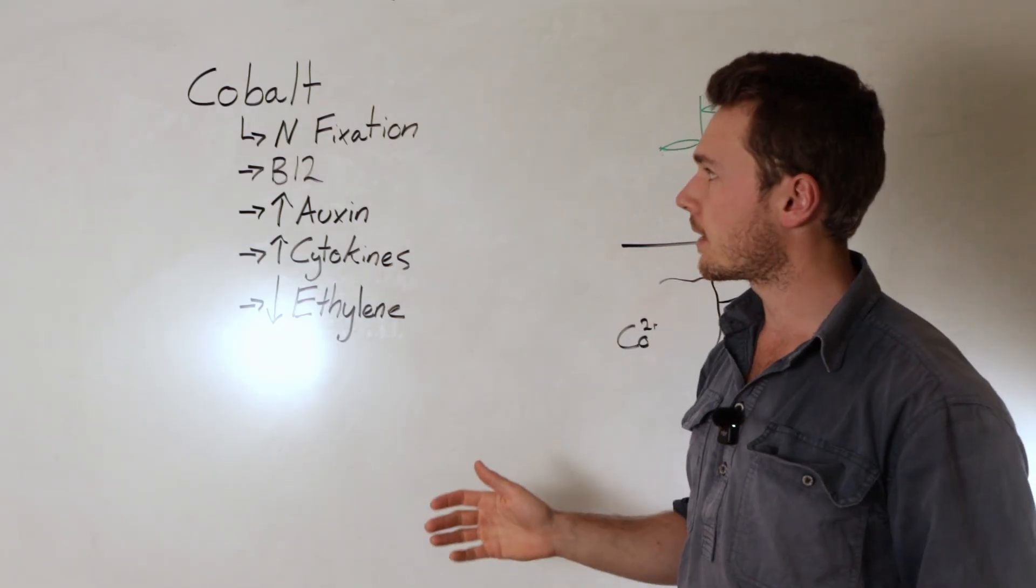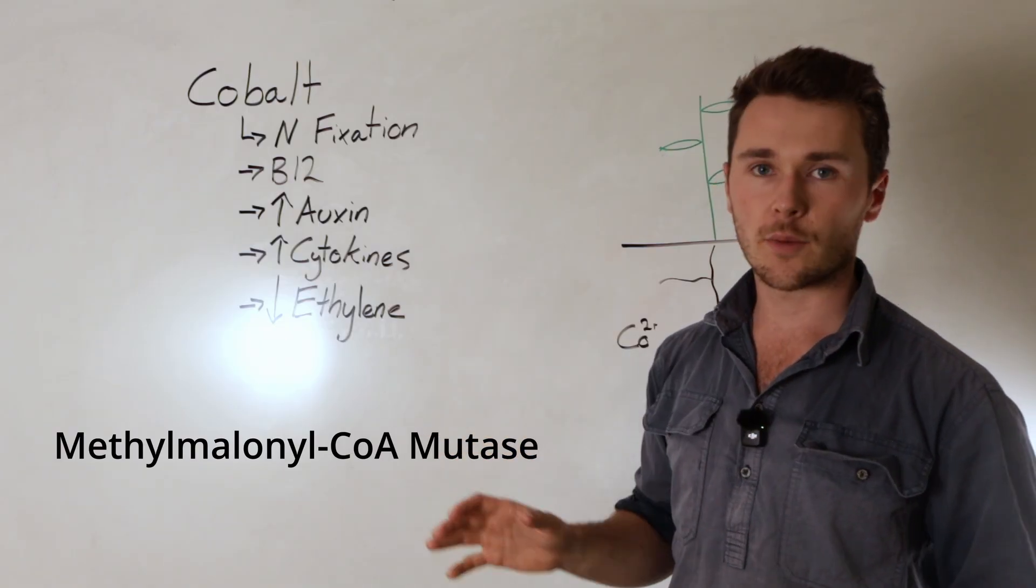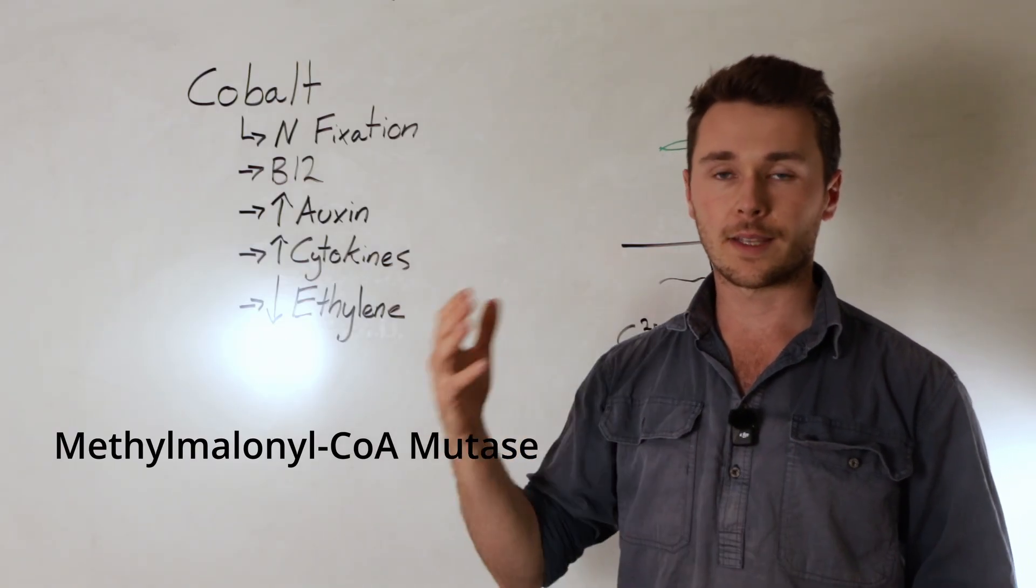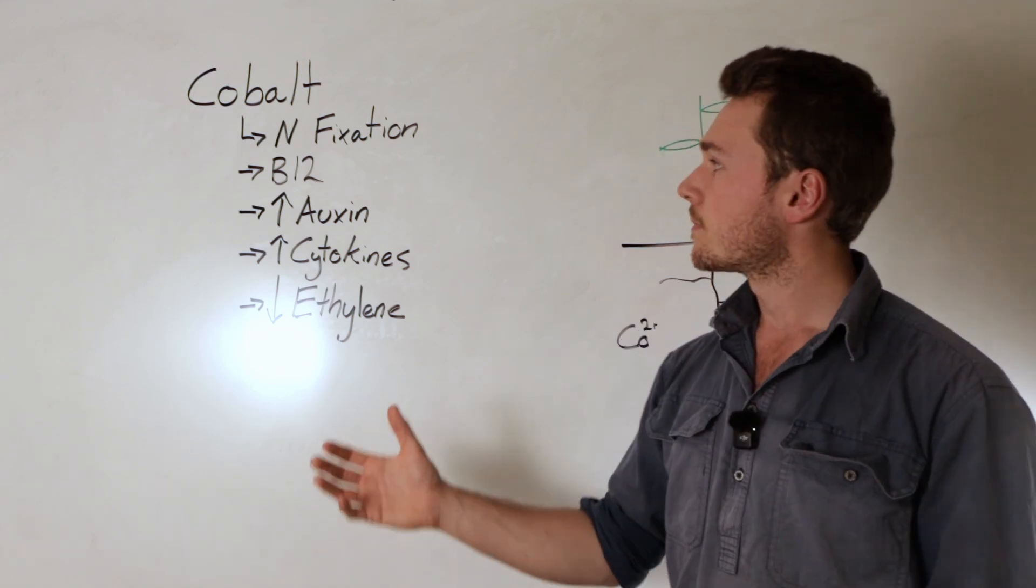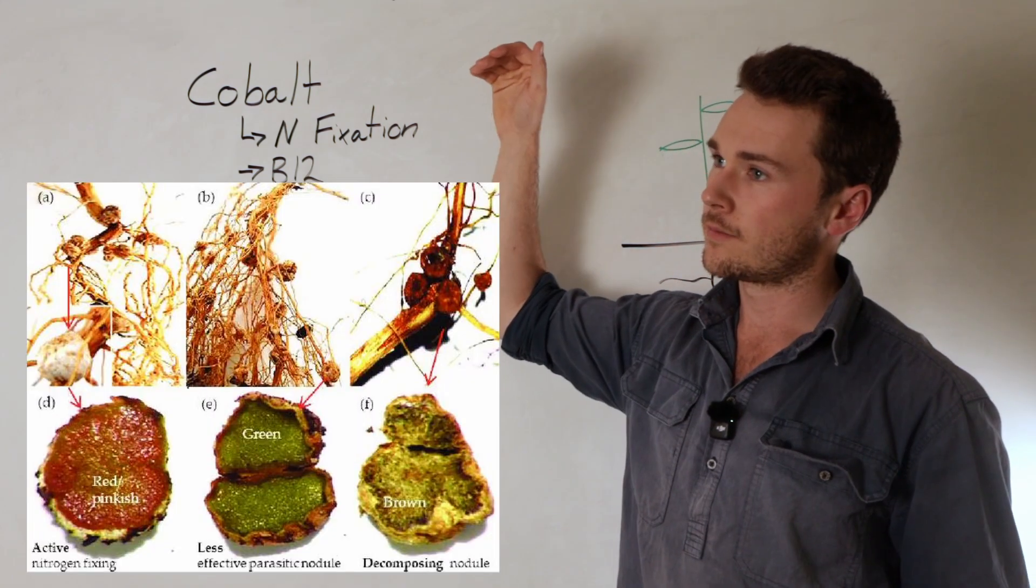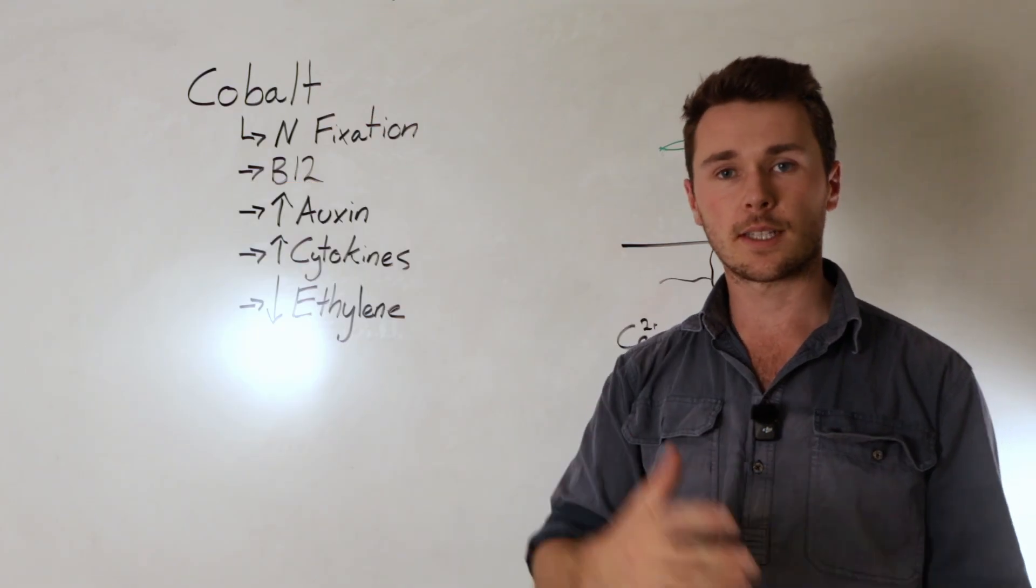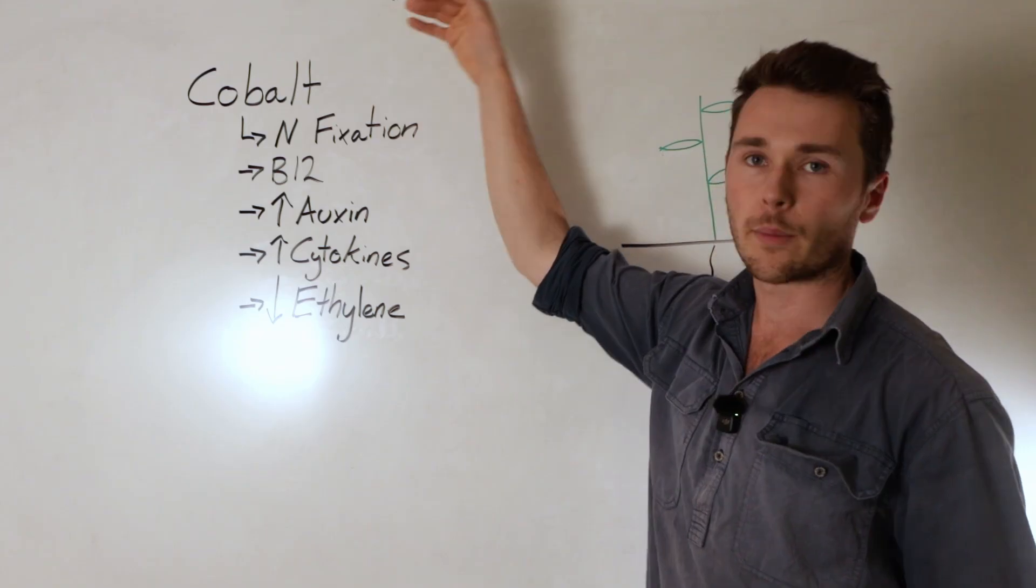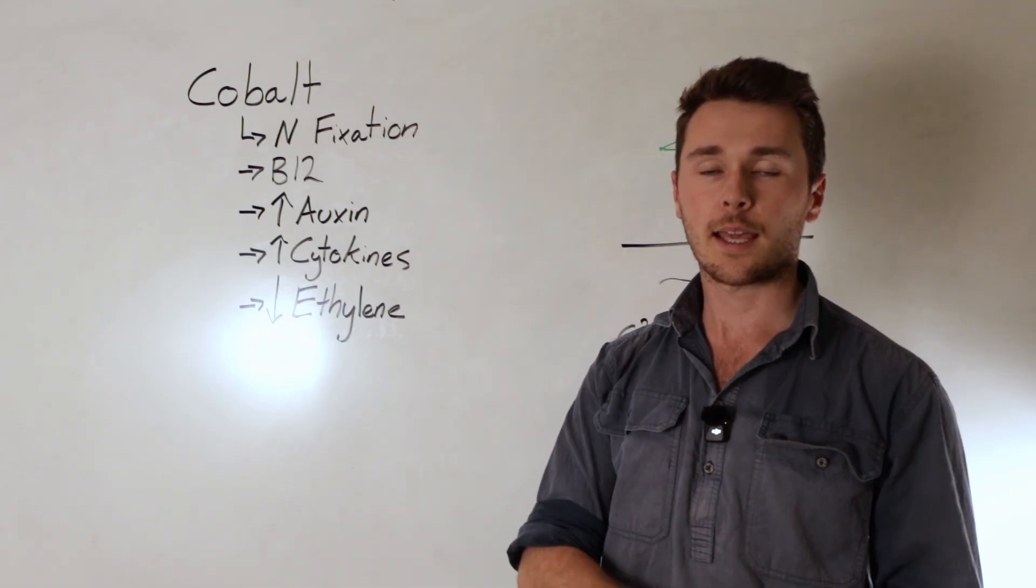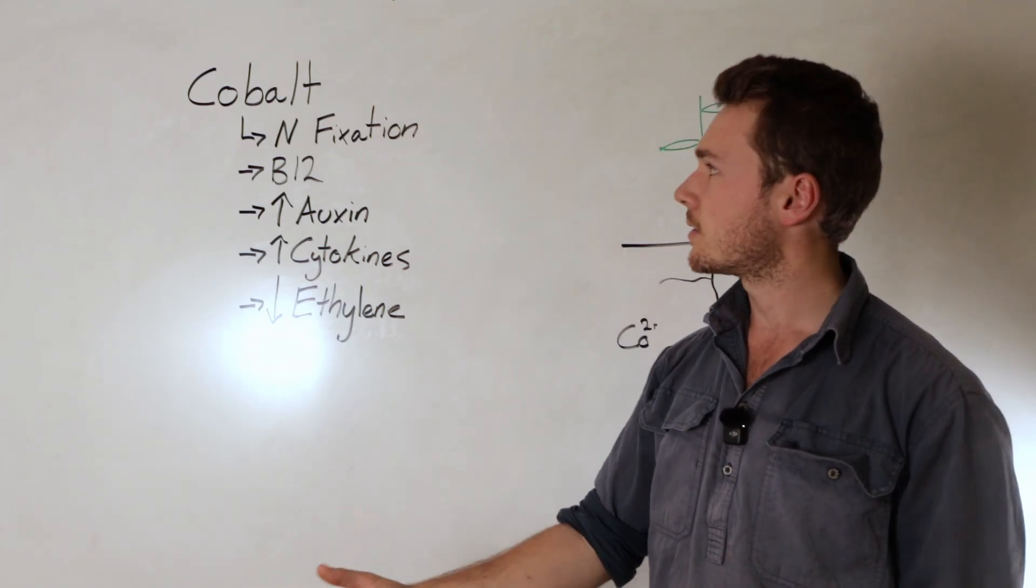The first one is something I can't pronounce, you can see it here. This enzyme is required in the production of leg hemoglobin, which is the enzyme which transports iron in the nodules. Without it the nitrogenase enzyme can't function because it needs a low oxygen environment, and so therefore without cobalt you don't get leg hemoglobin and without leg hemoglobin you don't get nitrogen fixation.